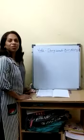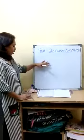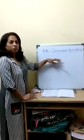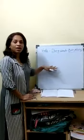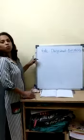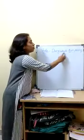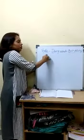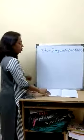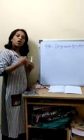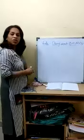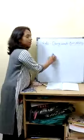Okay children, we saw the examples. Arun dances, Sita sings, Ravi was running. These were the examples for verbs. What is verb? Verb is doing word — in Kannada, kriyapadagalu. Now we will see it in the sentence and we all together will circle the verbs.